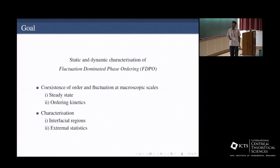So what is the goal? The goal is to characterize the static and dynamic behavior of the so-called fluctuation dominated phase ordering. As the term says, it is the coexistence of fluctuation and order both at macroscopic scales. This is unusual because if there are very large fluctuations, you're not going to expect order, but there can be situations where both can coexist.